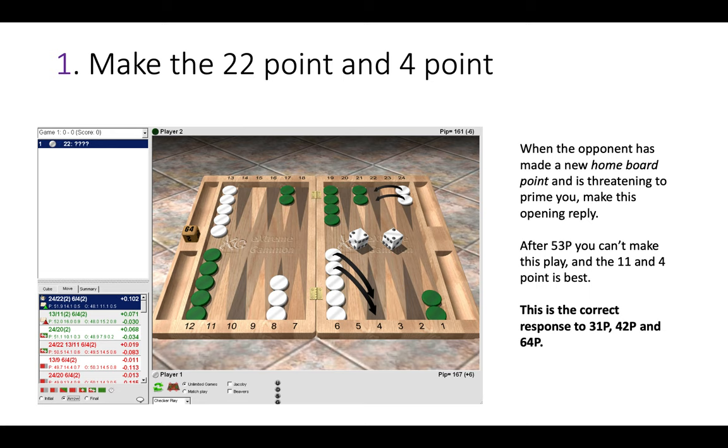Now if your opponent was to make the bar instead with a 6-1, then it's better to stay back on the 24 and that's because he hasn't unstacked his 6 point. But in all other cases where he makes an inner board point, then you must step up and then make a new inner board point yourself.